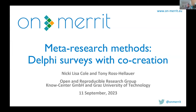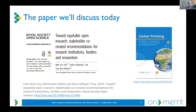Thanks so much to Tracy for the invitation to present here, and thanks to everybody for attending. This is a wonderful series of webinars — really instructive. Nikki and I are from the Open and Reproducible Research Group in GRADS. Today we'll talk about a paper we wrote in the context of the Horizon 2020 European-funded project called ON MERIT. The paper is entitled 'Towards Equitable Open Research: Stakeholder Co-Created Recommendations for Research Institutions, Funders, and Researchers,' published in Royal Society Open Science.